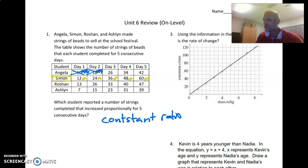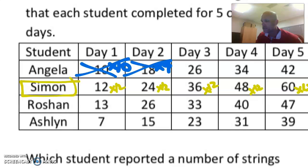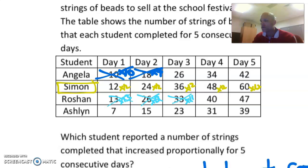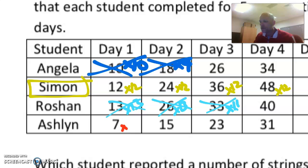Alright, so let's look at Roshan. The first one is times 13. The second one, 2 times 13. The third one is times 11. So it cannot be that, it has to be times 13 or times 11 for all of them. So no, cannot be Roshan. Alright, let's look at Ashlyn. 1 to 7 is times 7. 2 to 15 is times 7.